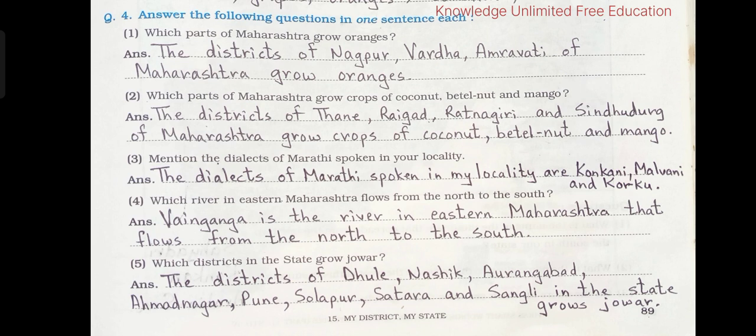2. Which parts of Maharashtra grow crops of coconut, betel nut and mango? The districts of Thane, Raigarh, Ratnagiri and Sindhudurg of Maharashtra grow crops of coconut, betel nut and mango.